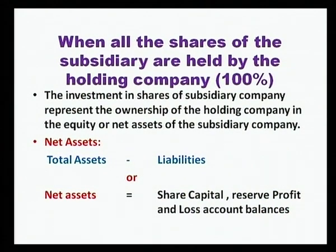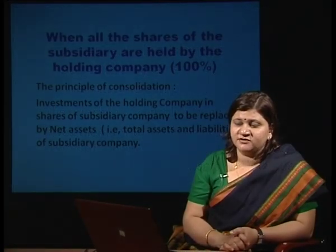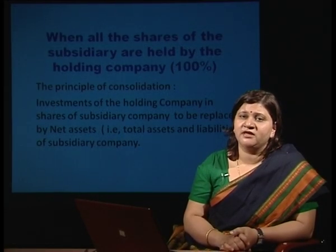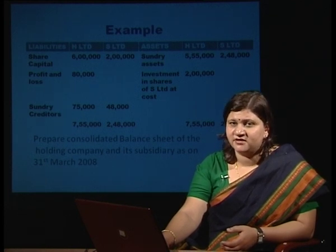The investment in shares of subsidiary company represents the ownership of the holding company in the equity or net assets of the subsidiary company. Net assets means total assets minus liabilities, or equivalently share capital plus reserves plus profit and loss account balances. The principle of consolidation for a 100 percent subsidiary is that the investment of the holding company in shares of the subsidiary company is to be replaced by net assets — total assets and liabilities of subsidiary companies are taken into the books of the holding company while the investments are eliminated.